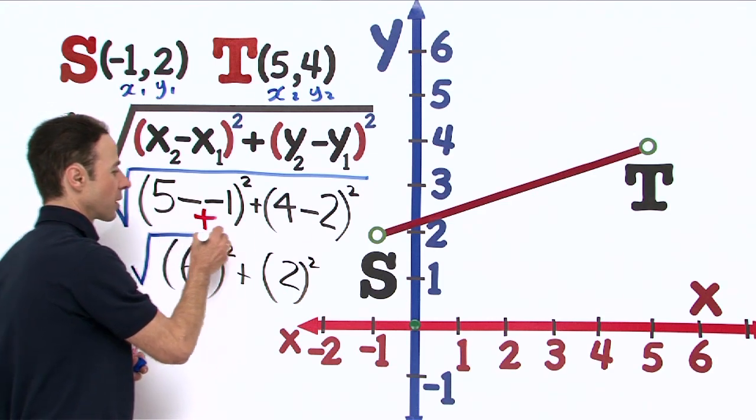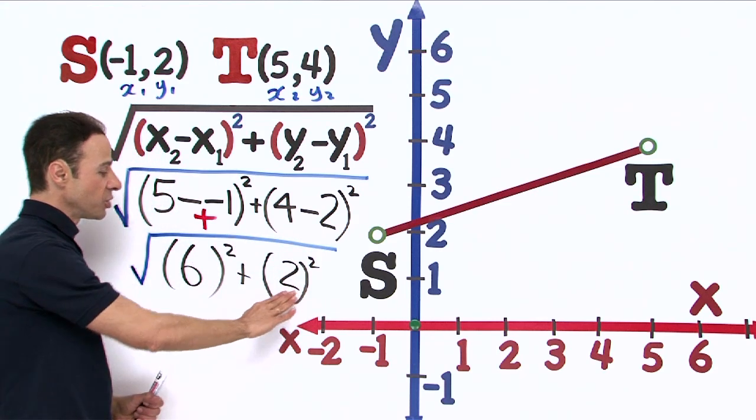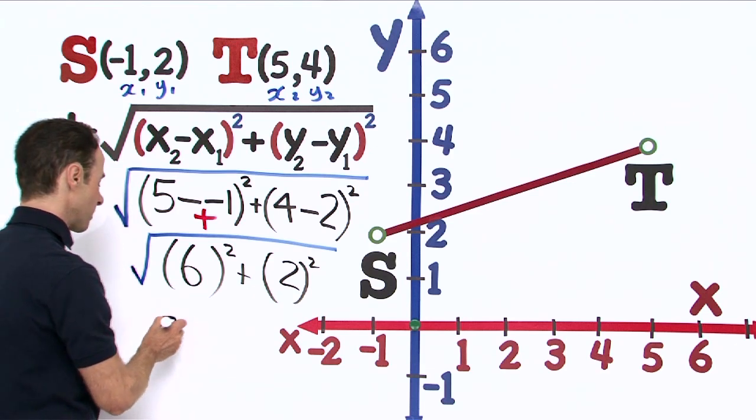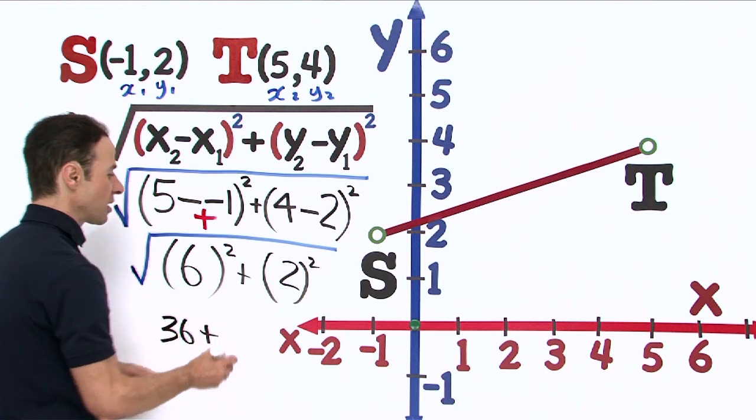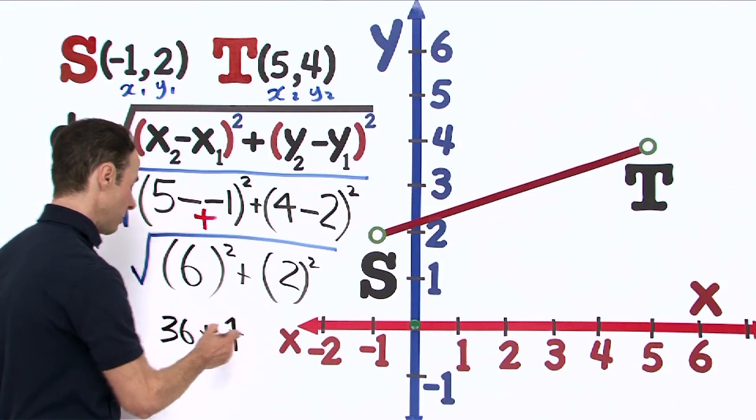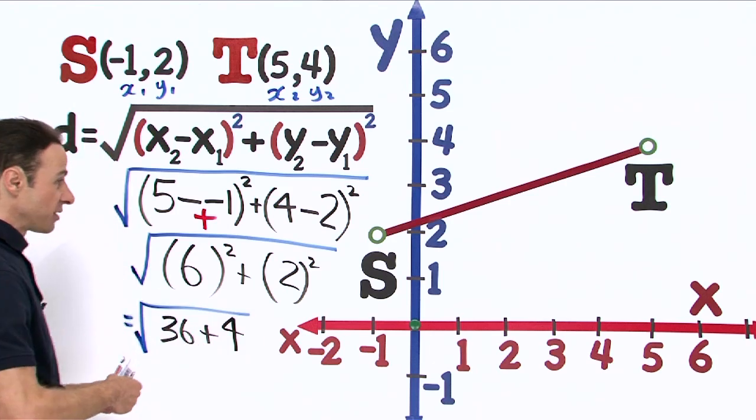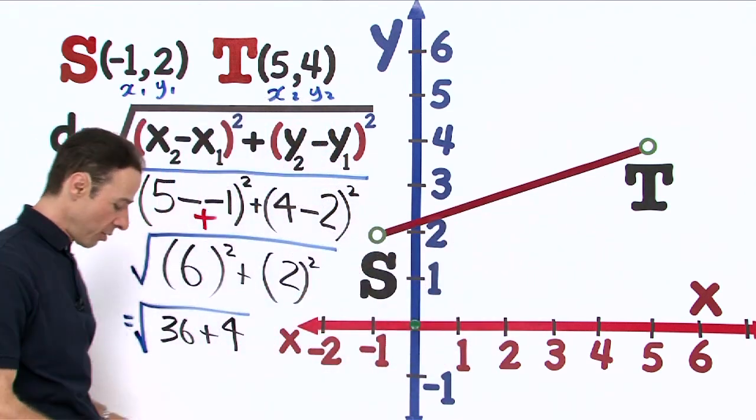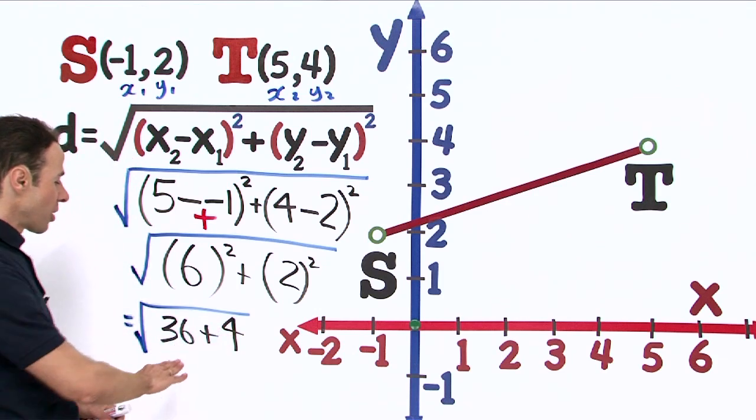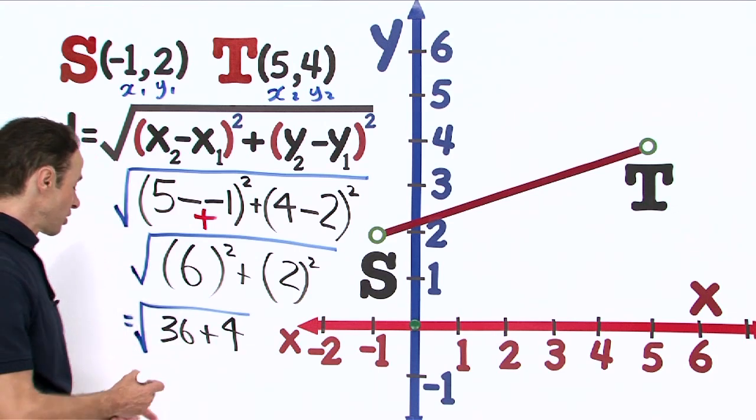Now we have 6 squared plus 2 squared. 6 squared is 36, plus 2 squared—2 times 2 is 4. Big giant square root sign again. We are looking at the distance between S and T, that length around there. 36 plus 4 is a grand total of 40, so the distance is the square root of 40.